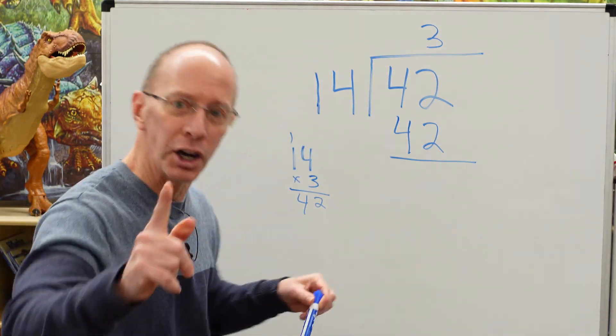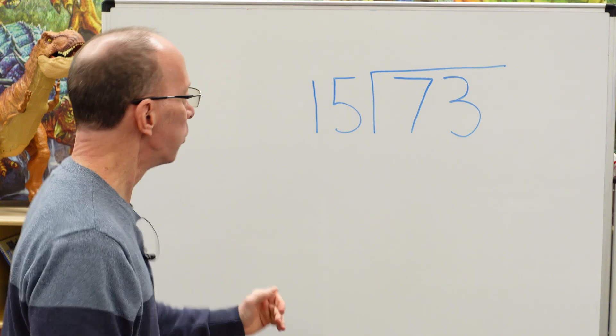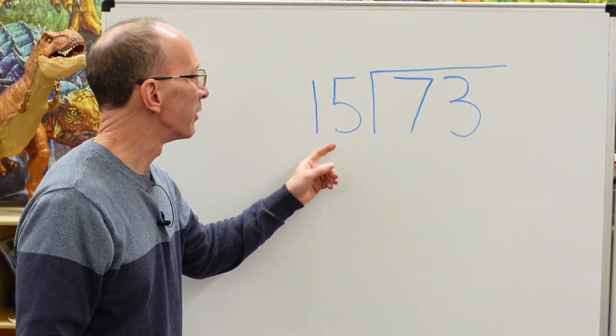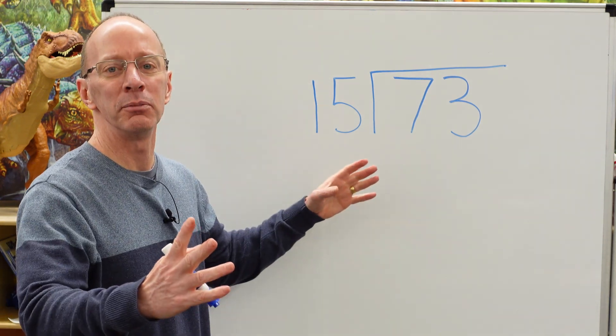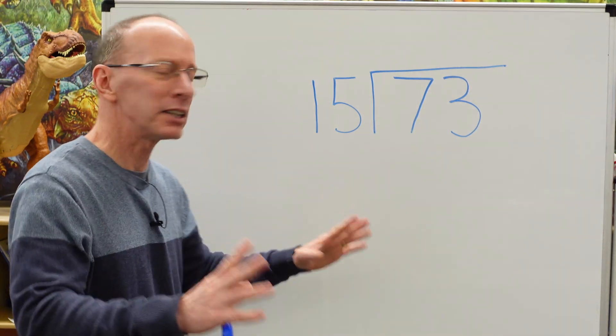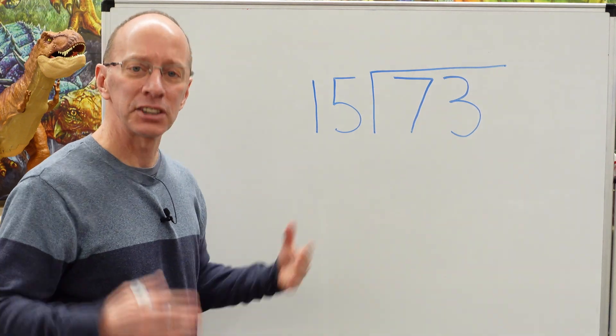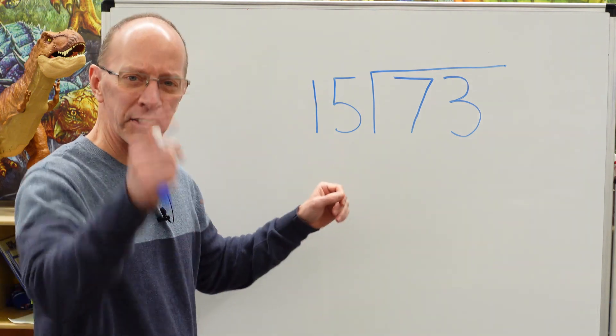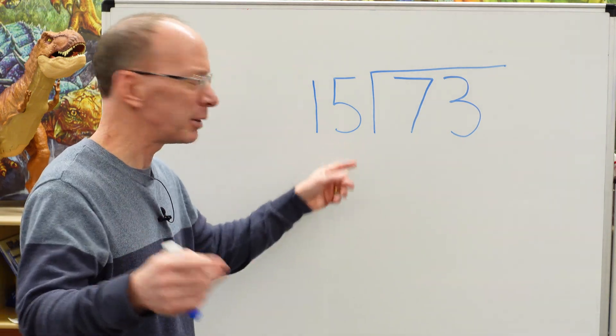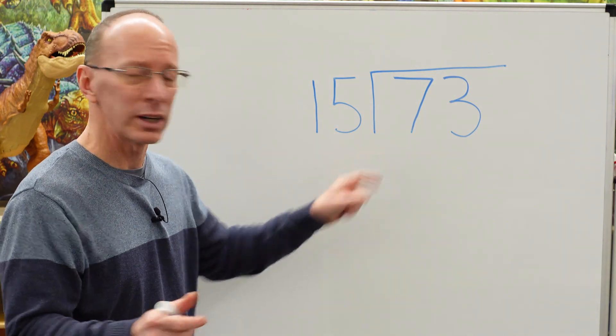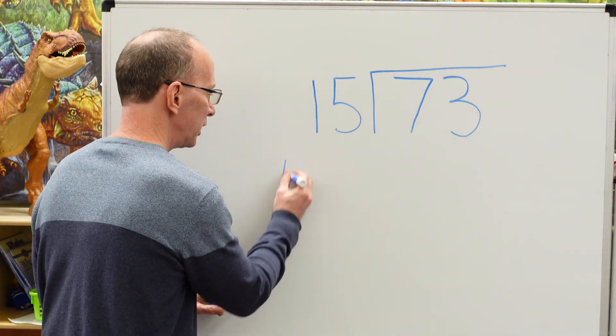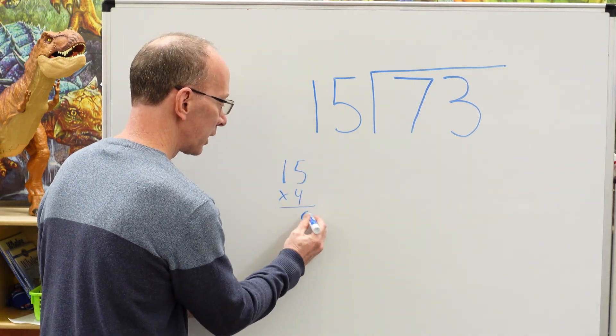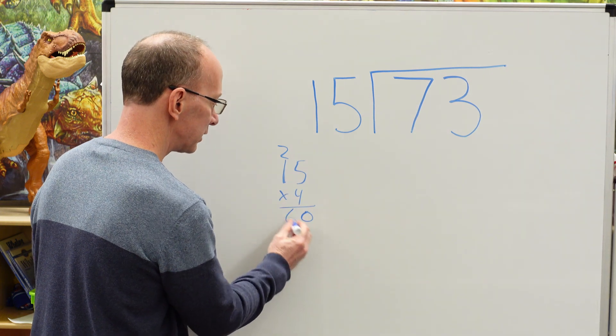Welcome back. We have 15 going into 73. I know you didn't memorize your 15s, but we can work it out. 15 plus 15 is 30, so 15 times 2 is 30. If we take 30 and 30, that's 60, so 15 times 4 is 60. We're getting really close. 15 times 4: 5 times 4 is 20, carry the 2. That's 60.